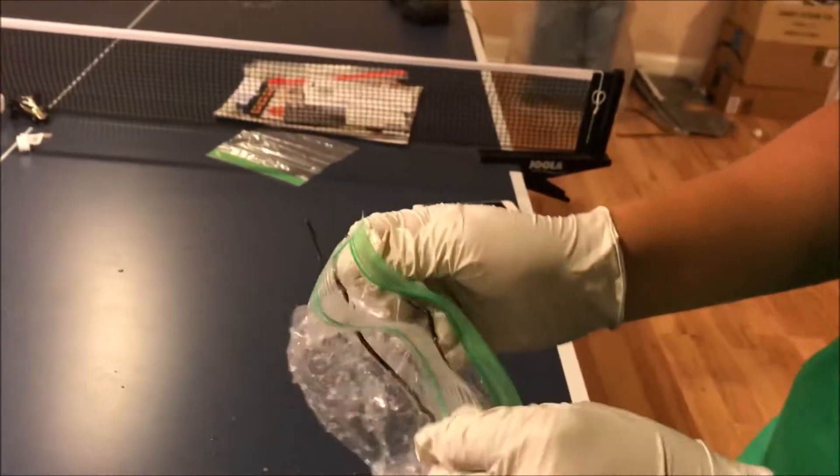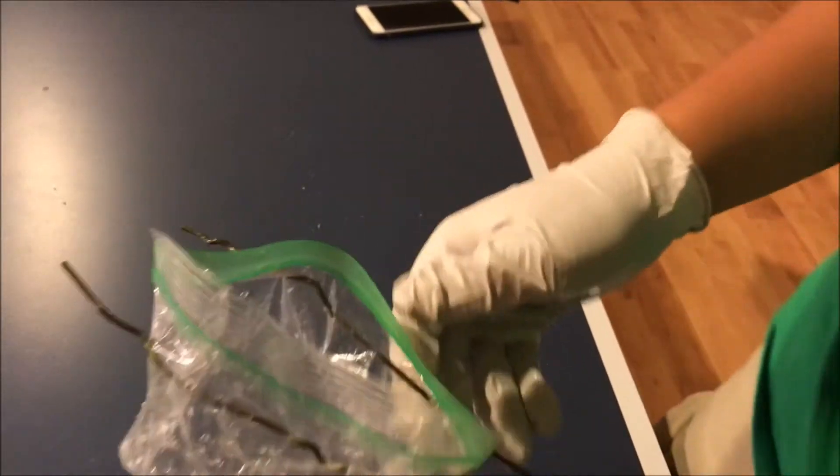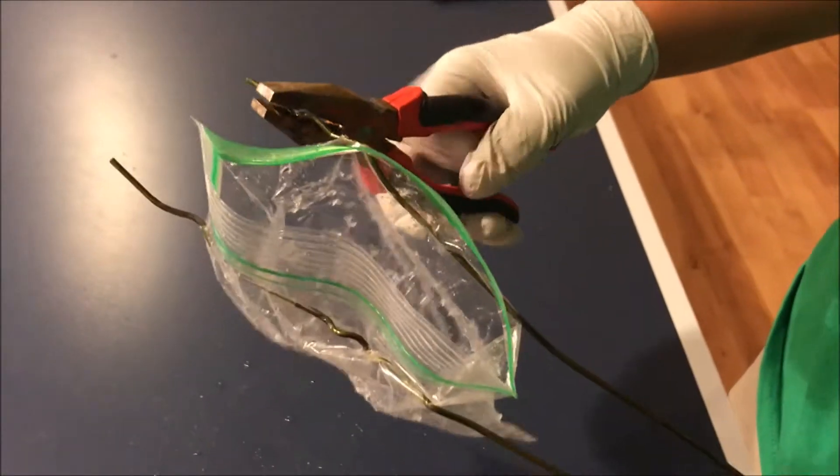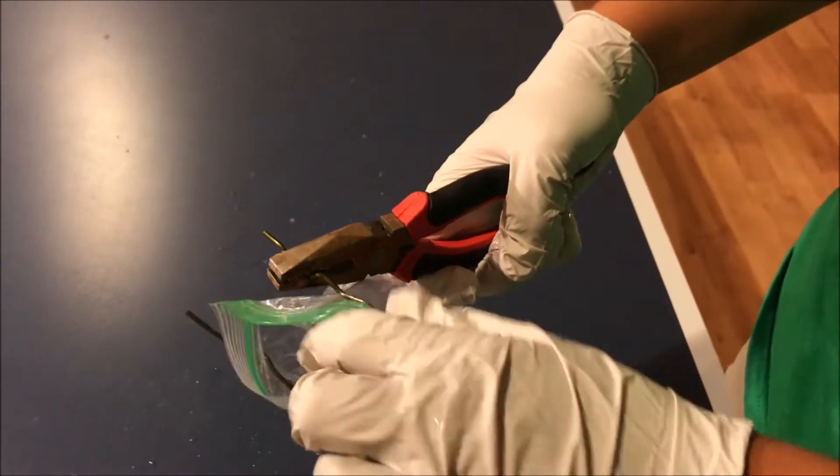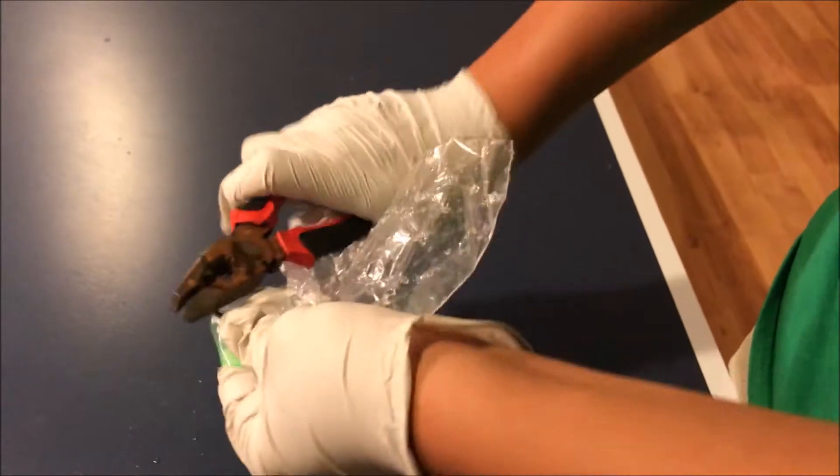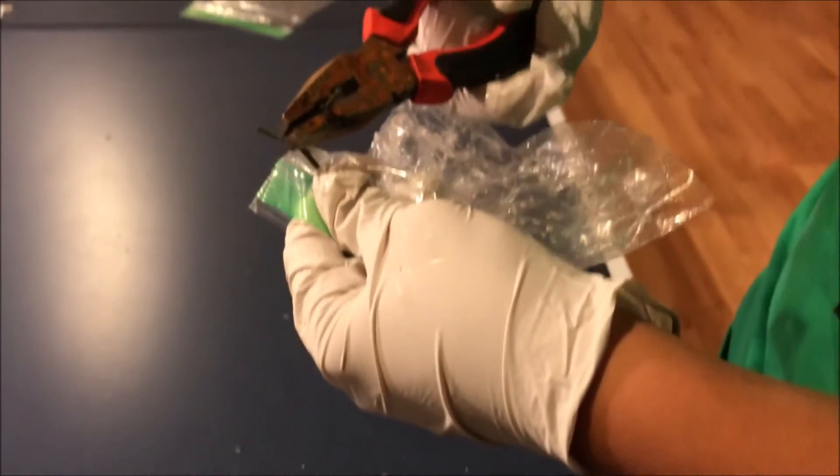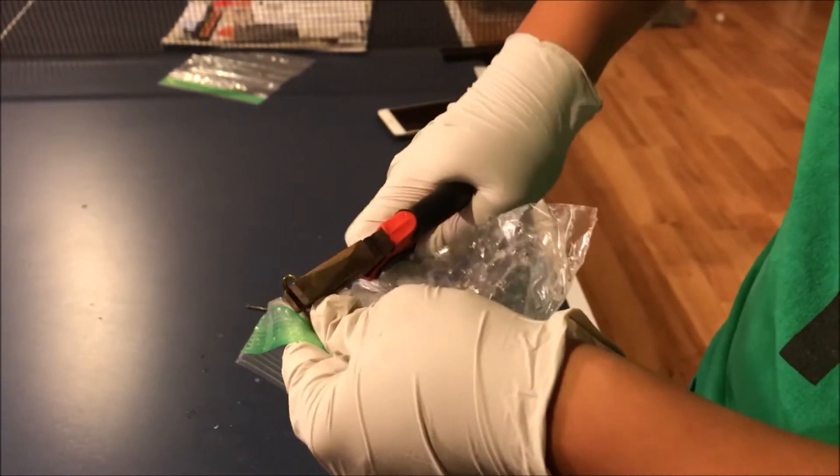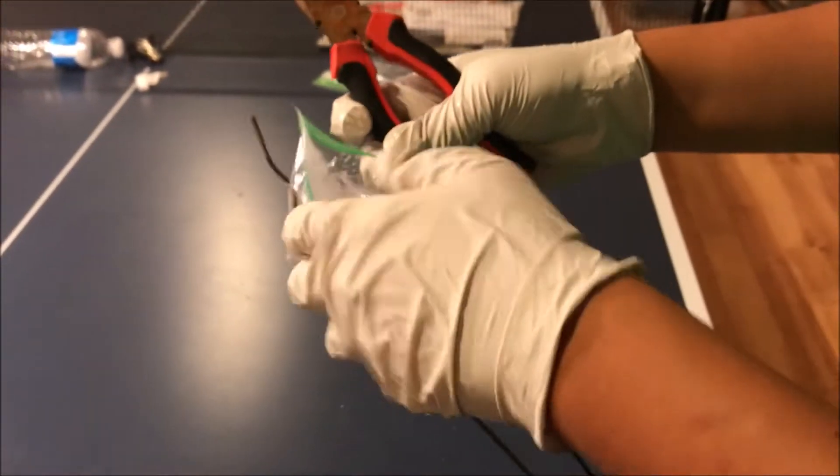Alright so now we have the net onto the handle piece. We're going to take our pliers. We're going to take this and we are going to move it all the way to the side. This way when you net the fish it won't hurt them and also so the net stays on to the handle.